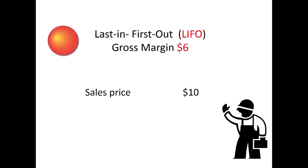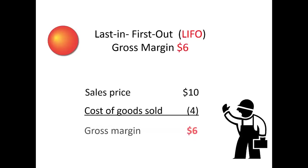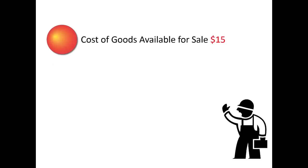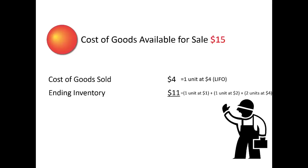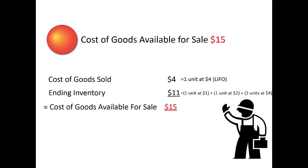Sales price of $10 less cost of goods sold of $4 equals gross margin of $6. The original cost of goods available for sale of $15 reconciles as follows: cost of goods sold is $4 (one unit at $4), resulting in ending inventory of $11 — represented by one unit at $1, one unit at $2, and two units at $4 — resulting in total cost of goods available for sale of $15. Cost of goods sold was $4; remaining ending inventory is $11.